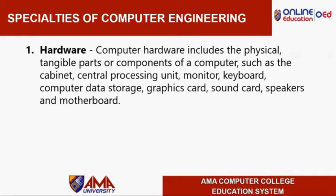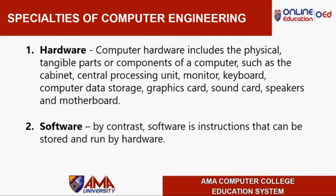By contrast, software is instructions that can be stored and run by hardware. An example is an operating system, or OS, which is a system software that manages computer hardware and software resources and provides common services for computer programs. Nearly every computer program requires an operating system to function. The two most common operating systems are Microsoft Windows and Apple Mac OS.